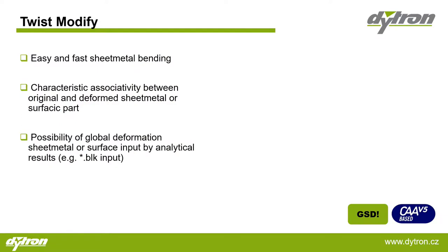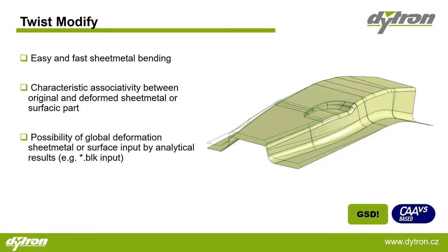Twist Modify is another feature selected from this module. In this case, we are talking about a global deformation in a forming direction, where particular emphasis is placed on easy and fast sheet metal bending. There is a characteristic associativity between the original and deformed sheet metal or surface part, and also a possibility of global deformation of the sheet metal surface input by analytical results, like bulk input. The next step is to zoom in on this particular feature in another practical example.